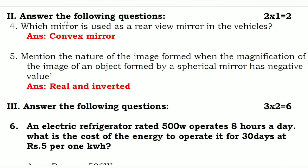Second section — Answer the Following Questions — has two questions, each carrying one mark. Fourth question: which mirror is used as a rear view mirror in a vehicle? In the rear view mirror, we always use a convex mirror, because when an object is coming near to the vehicle the object appears larger, so we always use a convex mirror in vehicles.